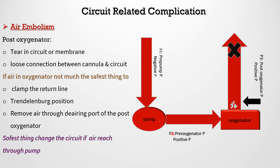The most dangerous effect of air embolism occurs when air is post-oxygenator. This may be due to a tear or crack inside the membrane itself, or disconnection between the return cannula and the circuit. First, clamp the return line to prevent air reaching the patient. If air remains inside the oxygenator, aspirate it through the post-oxygenator ports. If air has exited the post-oxygenator and is near the return line to the patient, clamp the line, place the patient in Trendelenburg position, and remove the air through the post-oxygenator airing port. If this cannot be done, proceed with a circuit change.